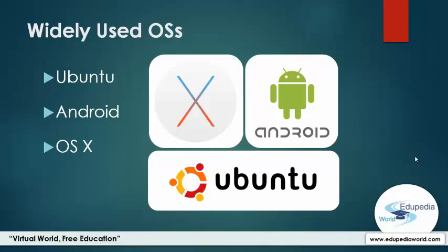Apart from Android OS, iPhones use iOS and Windows phones use Windows OS. OS X is another proprietary operating system developed by Apple. It is bundled with their Mac computers, so this operating system is closely related to their hardware — not like others.